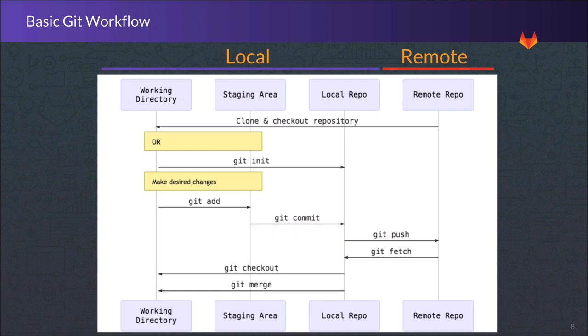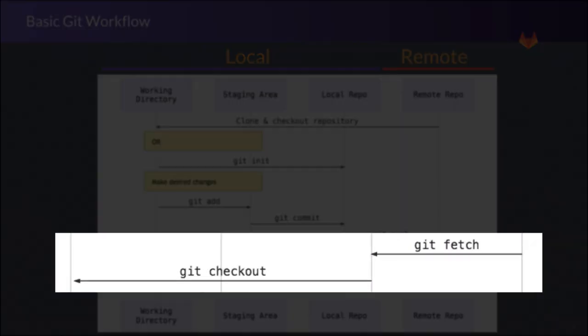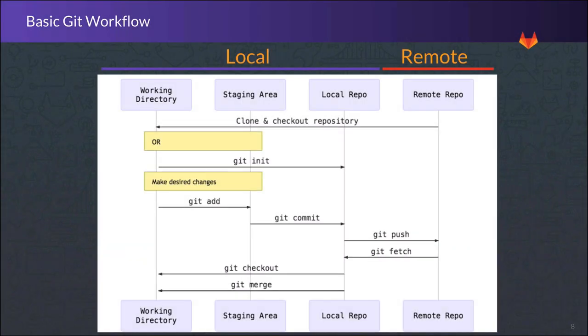To bring other changes that team members have made to the remote repository down to our local working copy, we can say git fetch, and that will bring them into our local repository. And git checkout will replace what's in our working directory with a branch we just fetched. But don't worry — because Git is constantly keeping track of our commits and changes, it will always be possible for us to get back to where we were at any point in time.